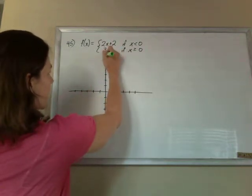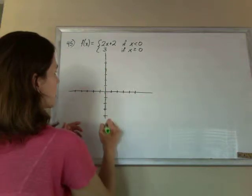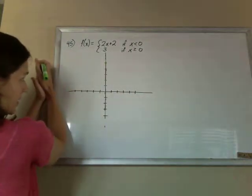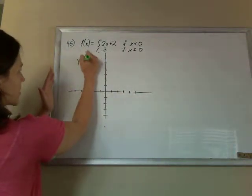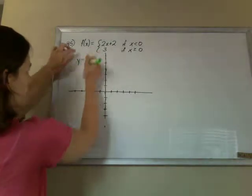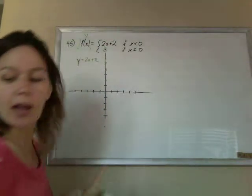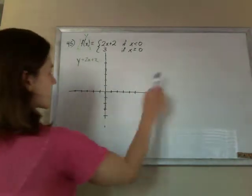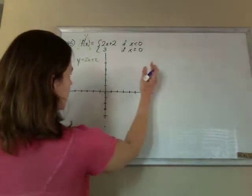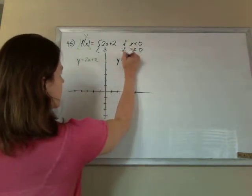So your dividing line is x equals 0, and on this side where the x's are less than 0, the y is going to equal 2x plus 2. Remember the f of x is like a y. And then on this side, when x is greater than or equal to 0, y is going to equal 3.